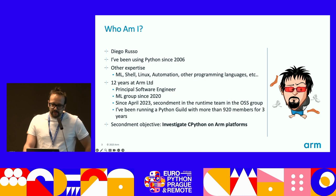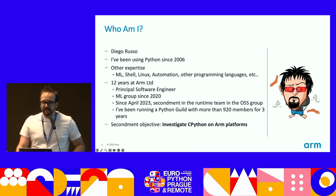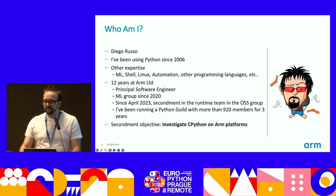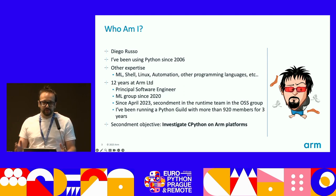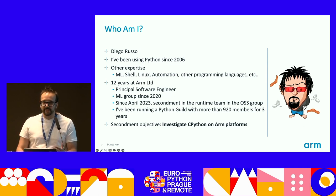Almost three years ago, I started a Python Guild, which is an internal Python community where we organize talks, events, summits, and so on. But in the last few months, I've been doing a secondment within the company, which is a rotation in the open source group. The goal of the secondment is to investigate CPython on ARM platforms. In today's presentation, I want to share with you what I discovered so far.